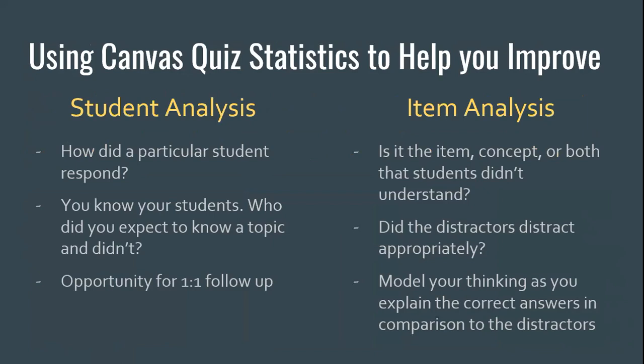In summary for student and item analysis: from the student analysis perspective, you can see how a particular student responded, who you expected to know a topic but didn't, and that creates opportunities for one-on-one follow-up. If you want to move from the assessment place to the learning space, that follow-up is a critical learning piece — you can revisit items with that student and clarify their confusion on specific items. You might also notice whether a student seemed to get worse over time and open a conversation about test anxiety.